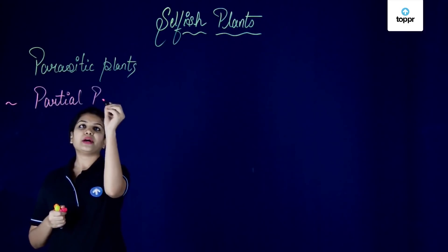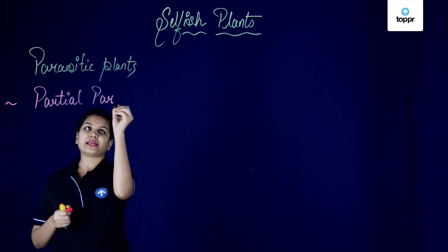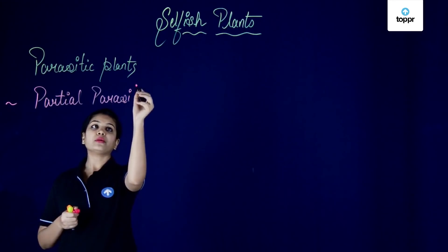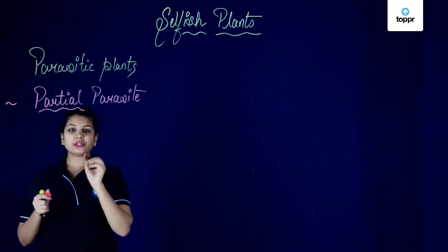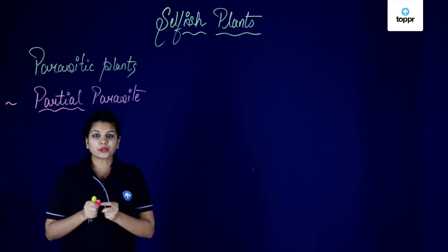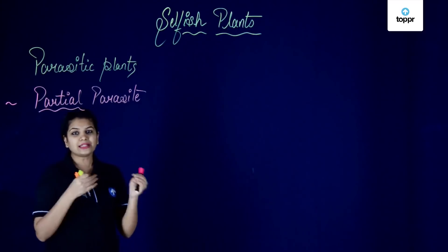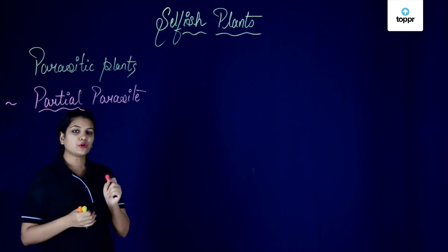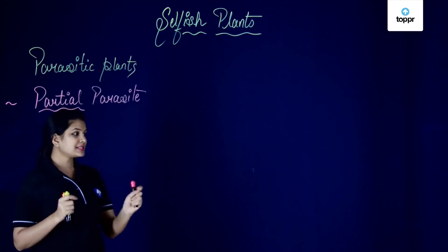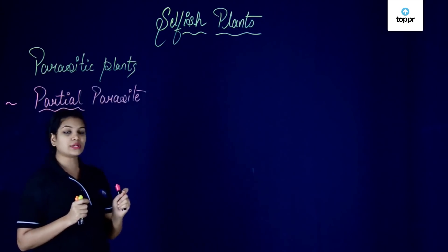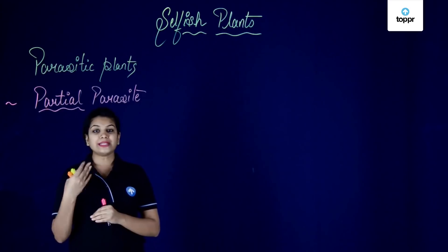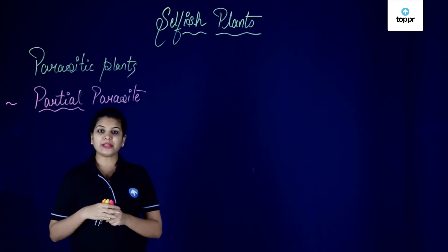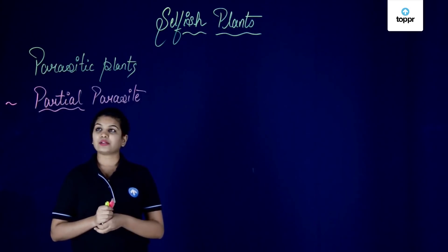We call it a partial parasite because it depends on other plants only for some nutrients — not for entire nourishment. In the case of mistletoe, it is water. So plants which do not entirely depend upon other plants are called partial parasites.